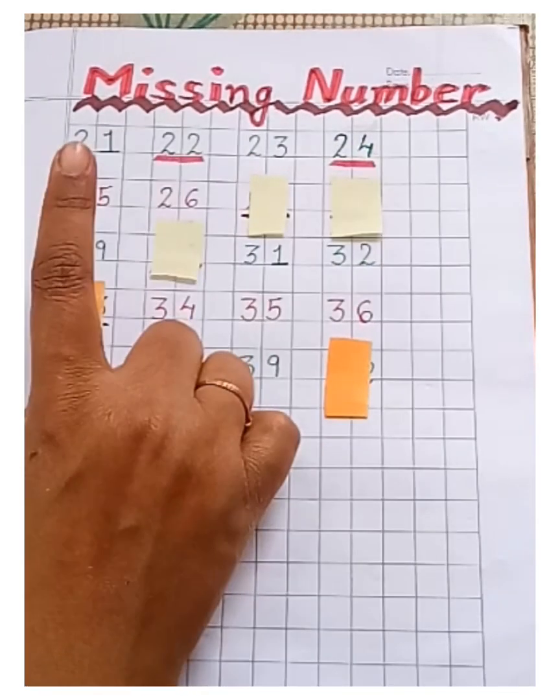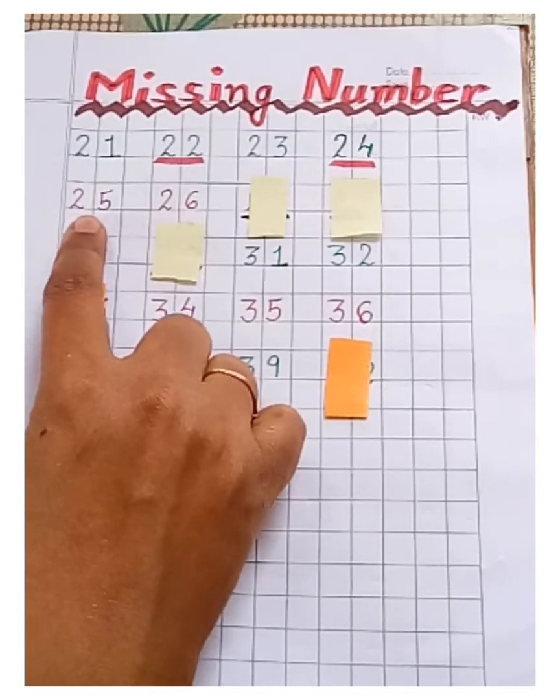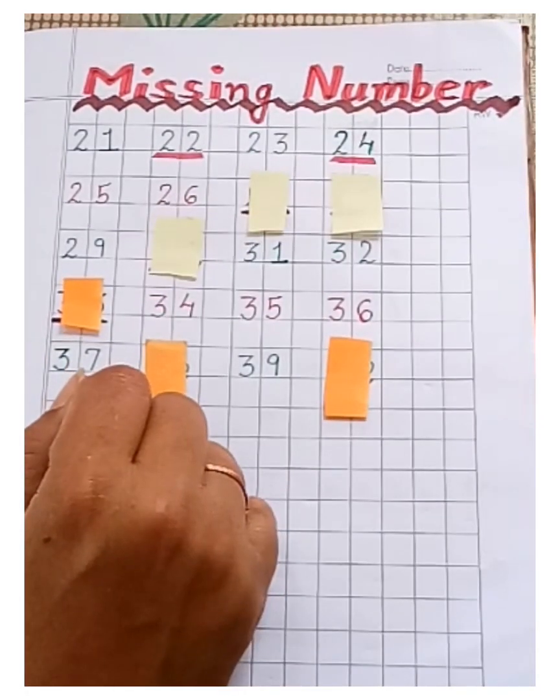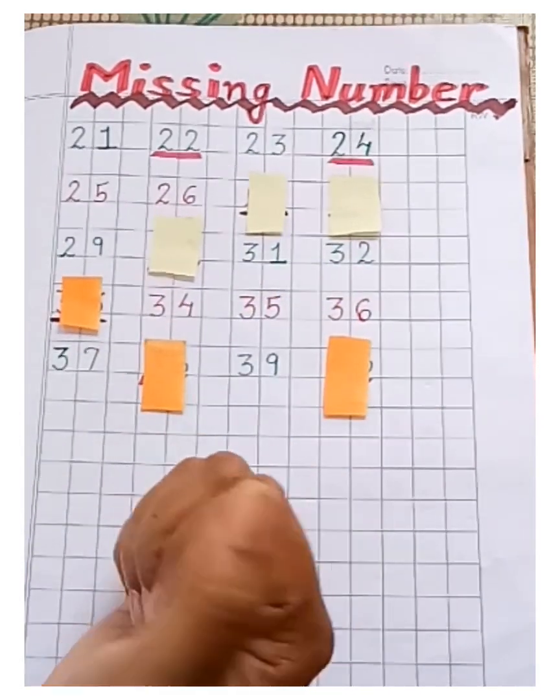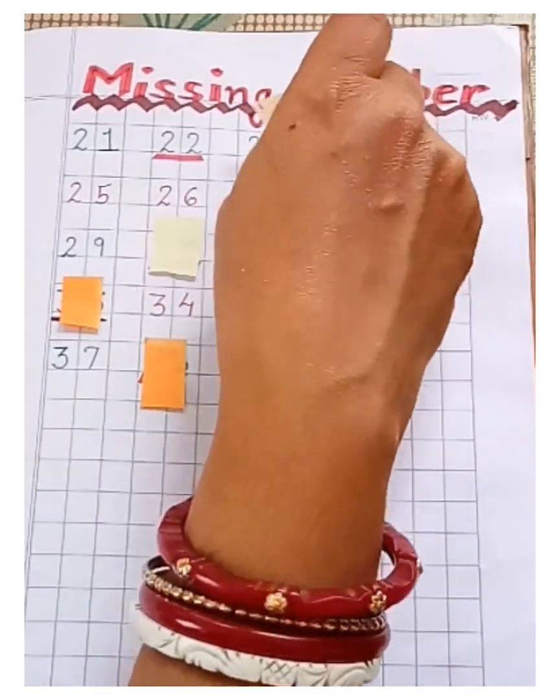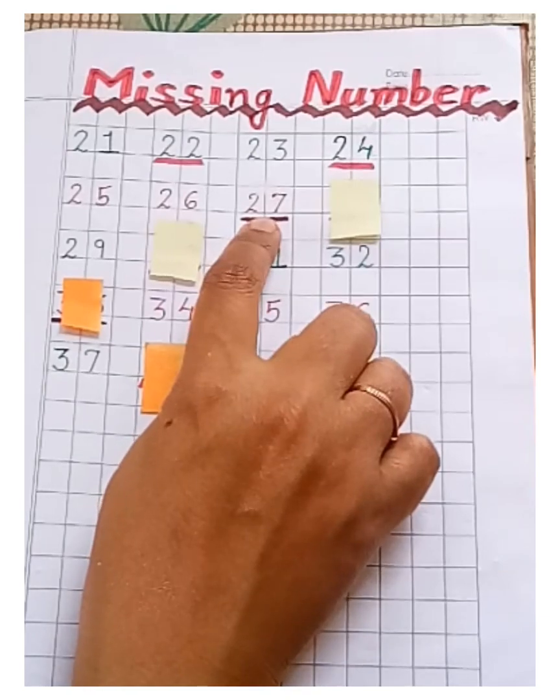Then, 25, 26. Now which number is next? It's missing. Let's find out. It's 27.